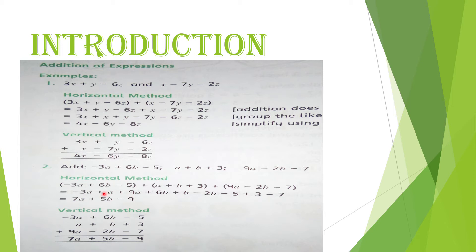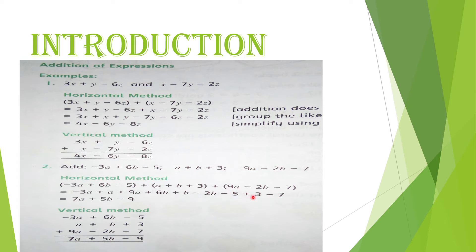9 aur 1 milake 10, 10 mein se 3 nikaalen to 7a. Phir 6b aur b — 7b, 7 mein se 2 nikaalen to plus 5b. Constant terms: minus 7 aur minus 5 milake minus 12, phir 12 mein se plus 3 nikaalen — answer minus 9. Final answer: 7a plus 5b minus 9.